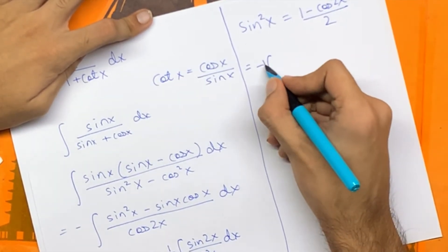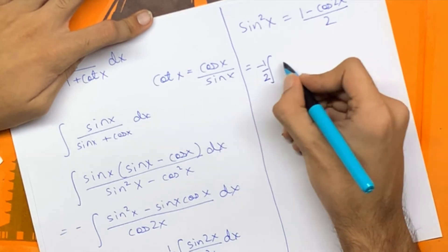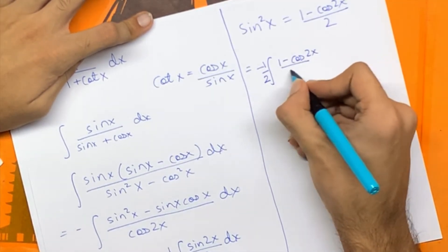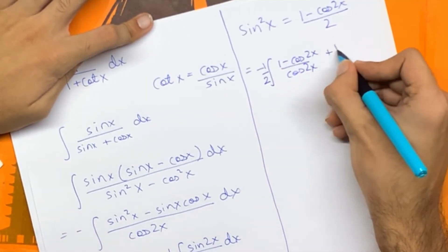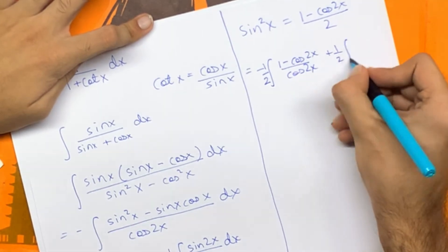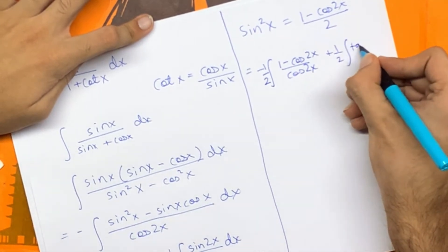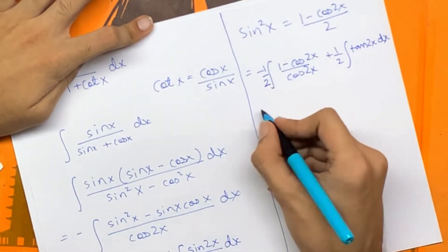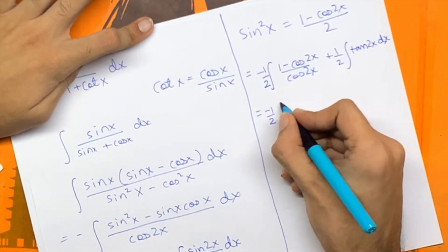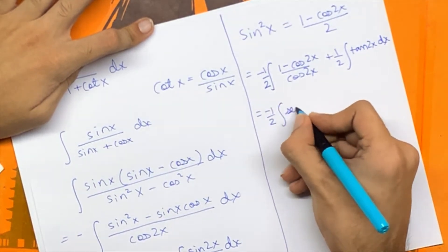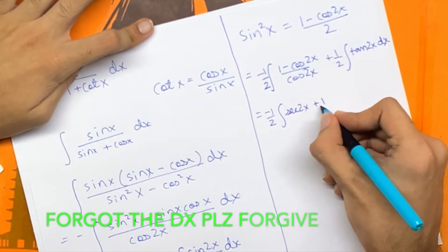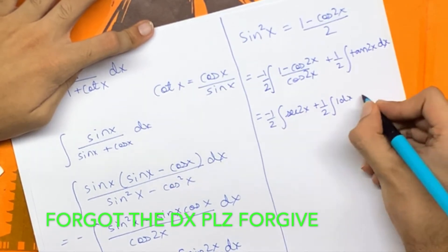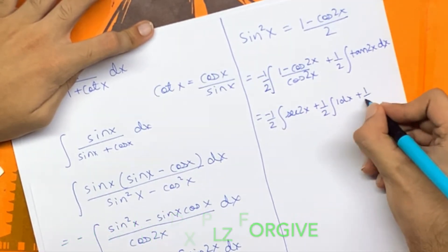We have minus half times the integral of 1 minus cos 2x upon cos 2x plus half times the integral of tan 2x dx, which gives us minus half times the integral of sec 2x dx plus half times the integral of 1 dx plus half times the integral of tan 2x dx.